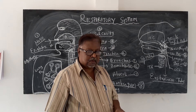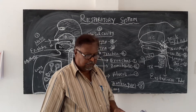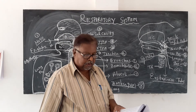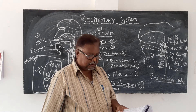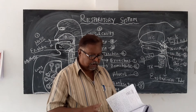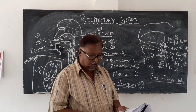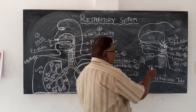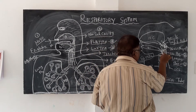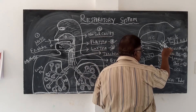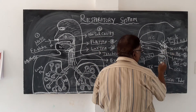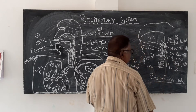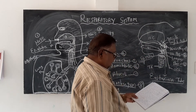The third part is the laryngopharynx. It is inferior to the oropharynx and posterior to the larynx. It serves as a common route for both air and food — food comes from here, air comes from here, and both meet in the laryngopharynx region.